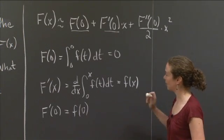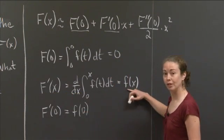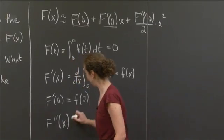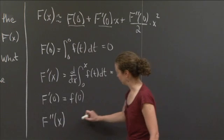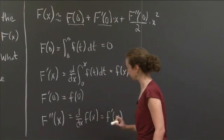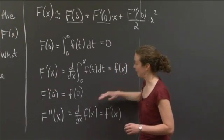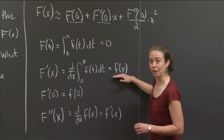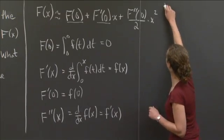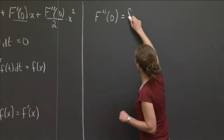We know what capital F prime is — it's little f. So if I want to take a second derivative of capital F, that's going to be taking a derivative of little f. That's d/dx of little f of x, which I can just write as little f prime of x. So capital F double prime equals little f prime. We evaluate that at 0, and that's just little f prime at 0.